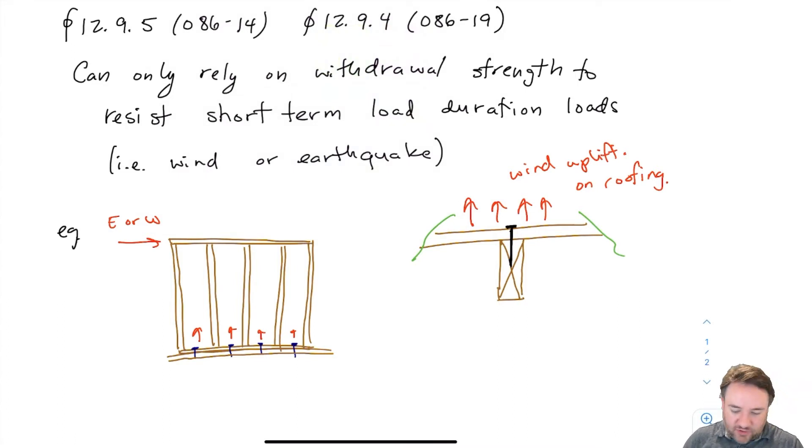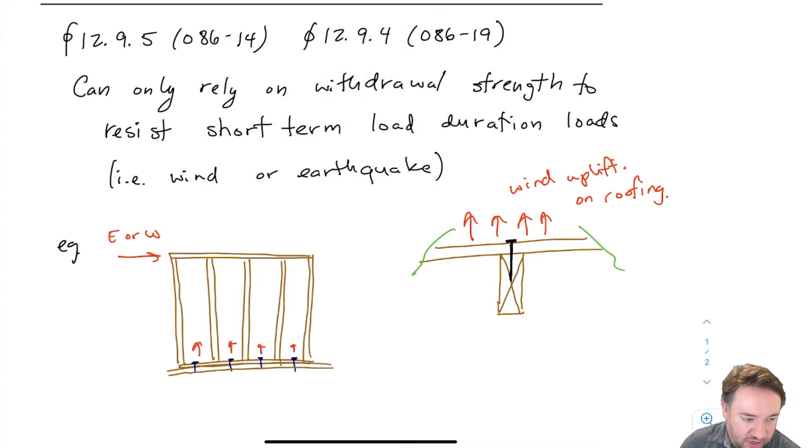The other limitation is that I cannot use withdrawal for end grain for any situation. So if I am nailing into the end grain of a piece of wood, if I have a situation that looks like this.